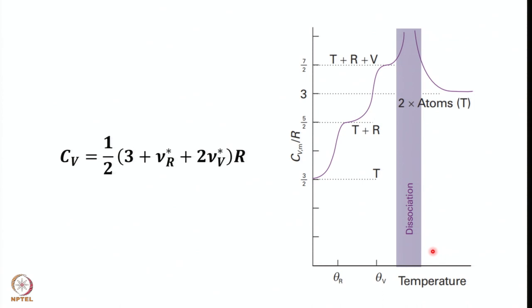We concluded that for a gas at room temperature, the translational contribution to constant volume heat capacity is 3/2 R. The rotational contribution for a linear rotor is R, and for a nonlinear rotor it is 3/2 R. For each normal mode of vibration, the contribution is R, provided all the modes are fully active.